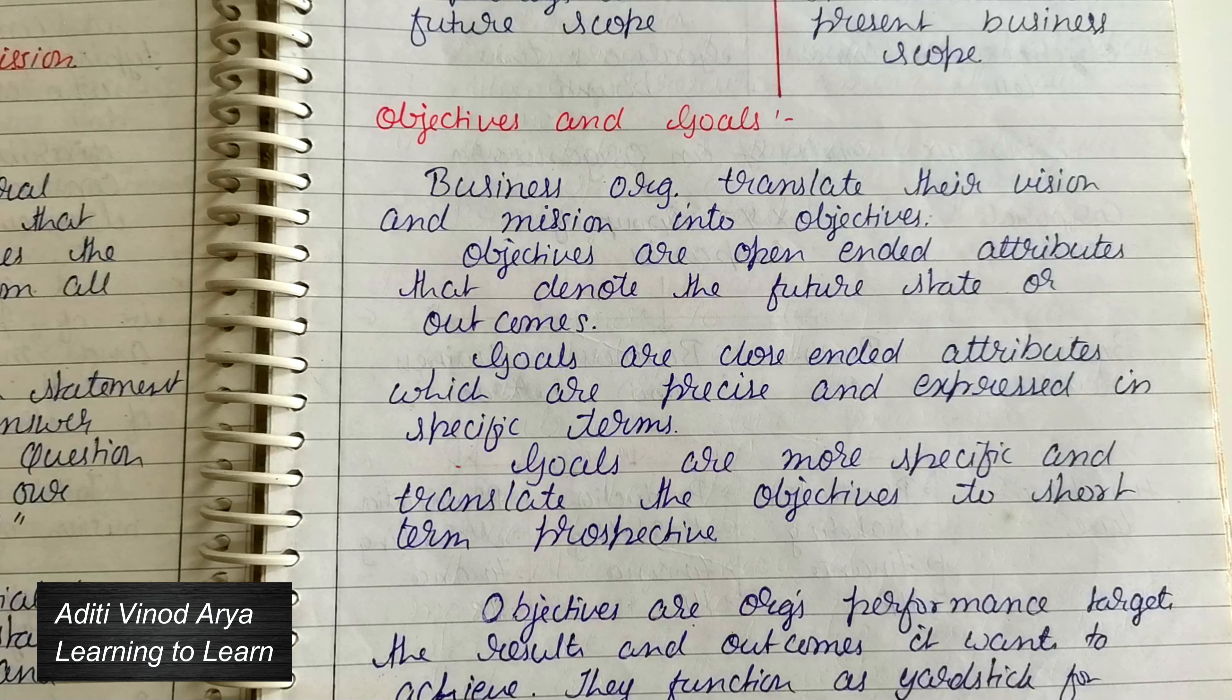You should now understand the exact difference between objectives and goals. But if not, let me repeat briefly. Goals are very specific. In goals we state what we will do next week, next month. They are close-ended and specific.